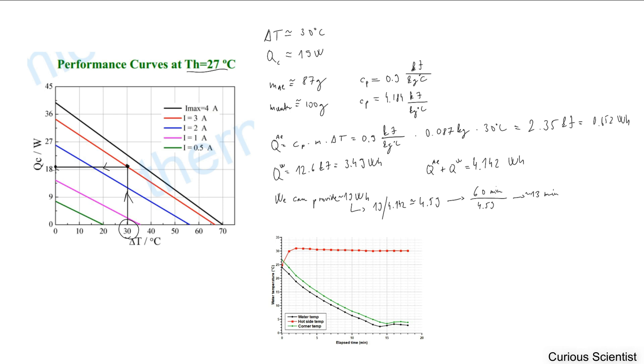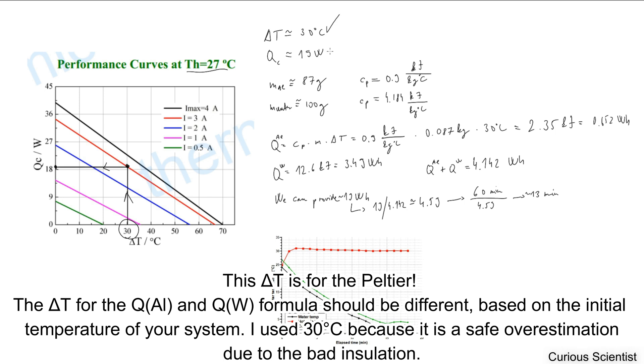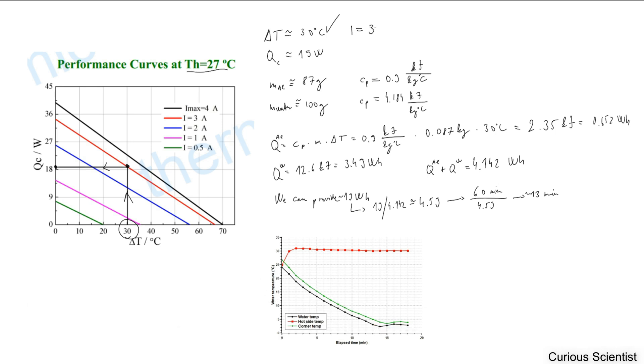So I wrote down all the data and calculations. We know we go for 30 degrees Celsius, and our QC at delta T equals 30 degrees Celsius and I equals 3 amperes. Then we have 19 watts.